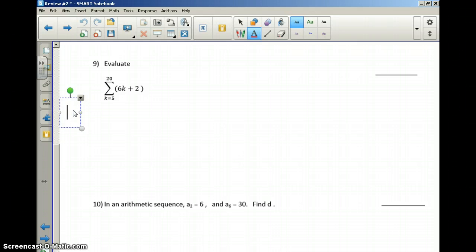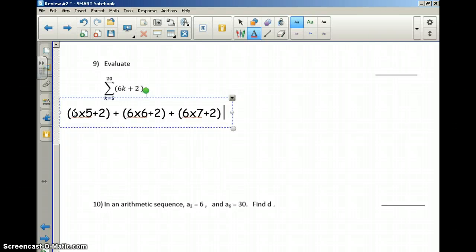So all right, I'm going to write this one out and I'm going to show you why I'm telling you the formula is the better way to go. So if I start at 5 and I have to go to 20, my first term looks like this. So 6 times 5 plus 2. And then I've got to add that to my next term, which would be 6 times 6 plus 2. Then I have to add that to the next term, which would be 6 times 7 plus 2. And then I have to find 6 times 8 plus 2. And I've got to do this all the way up to 20. That is going to take me forever. I'd rather not do that.